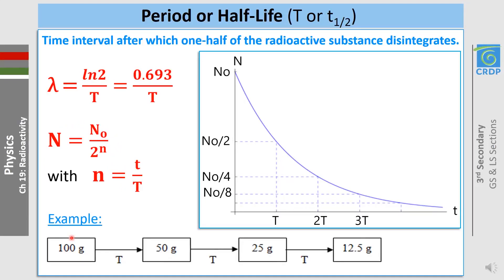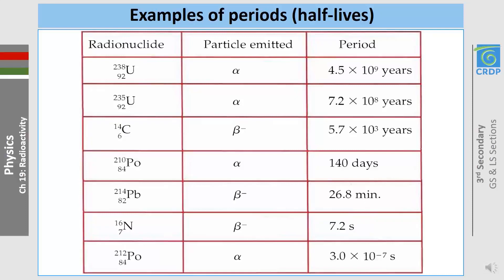For example, starting with 100 grams, after one half-life (say 10 years) we are left with 50 grams; after another 10 years, 25 grams; after another 10 years, 12.5 grams. To calculate the remaining quantity, we use N = N₀ / 2^n, where n = t/T, with t being the total time elapsed and T the half-life. Examples of half-lives range from billions of years for uranium, thousands of years for carbon-14, days for polonium, minutes for lead isotopes, and seconds for certain nitrogen isotopes.